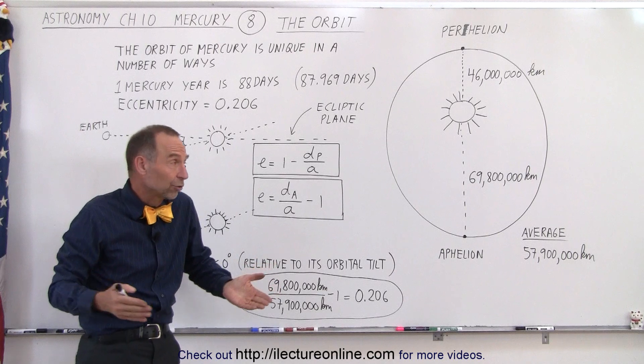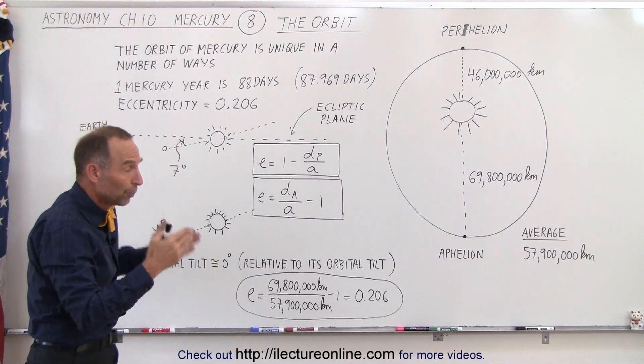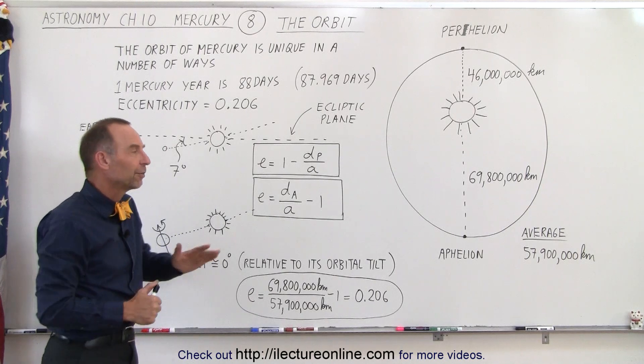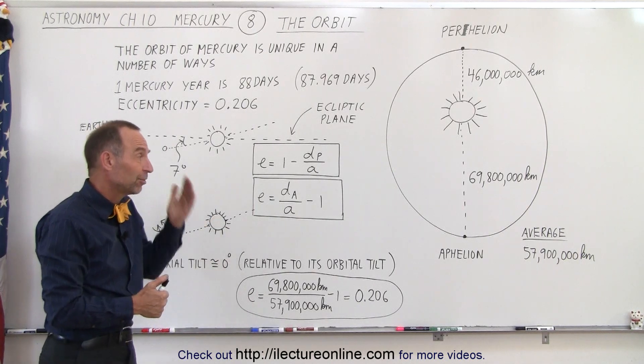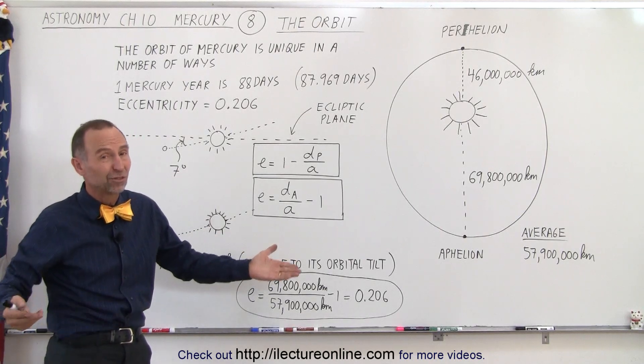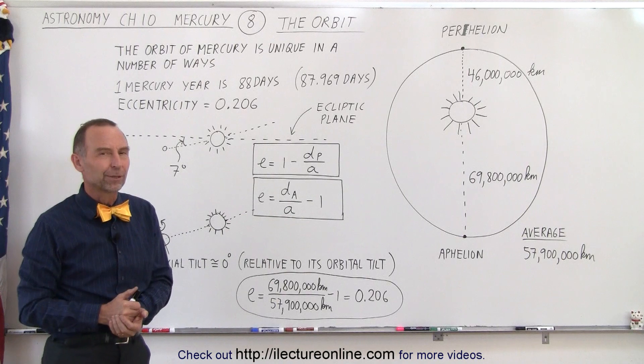So you can see that as far as the orbit is concerned, Mercury is a very unusual planet, very different in almost every respect of its orbit. And so this is what we know about the orbit, and we'll compare that later to the other planets to see why it's so special in the case of Mercury.